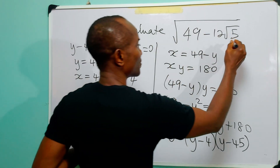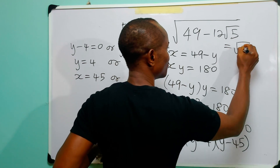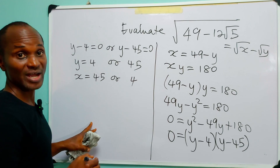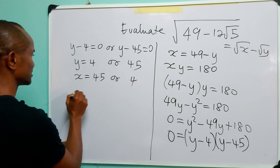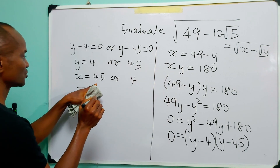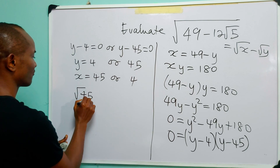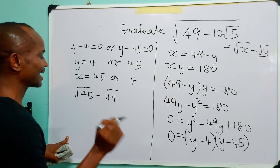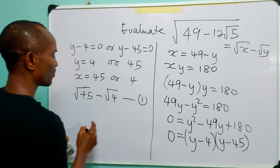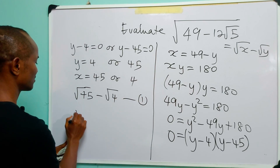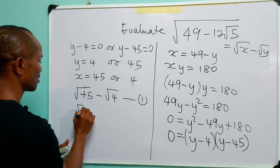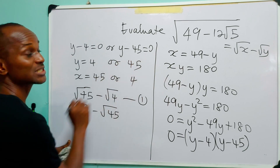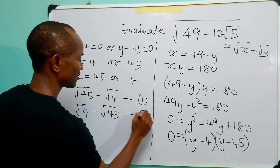Now remember that we equated the expression to root x minus root y, so now we have two candidate values. The first value is root 45 minus root 4, and the second value is root 4 minus root 45.